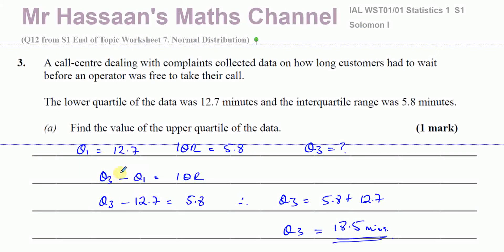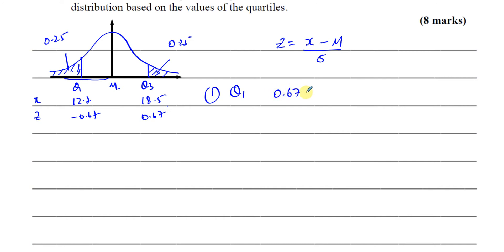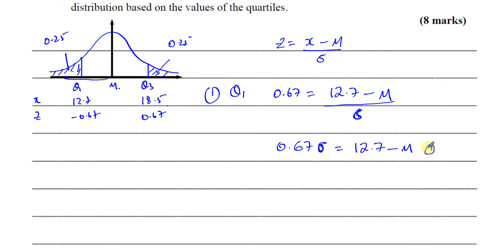Going back to our question: Q3 is standardized as 0.67 and Q1 is standardized as negative 0.67. We know that the standardized score Z equals X minus mu over sigma. Using the lower quartile, negative 0.67 times sigma equals 12.7 minus mu. That's the first equation.